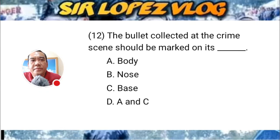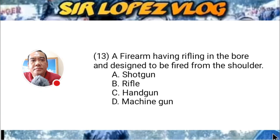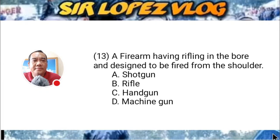Question number thirteen: A firearm having rifling in the bore and designed to be fired from the shoulder. A) shotgun, B) rifle, C) handgun, or D) machine gun?